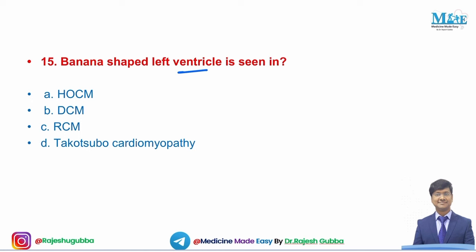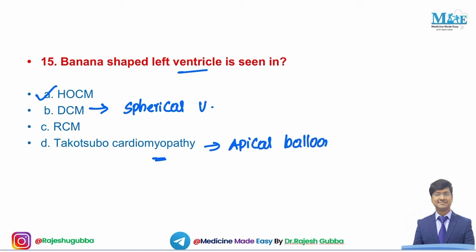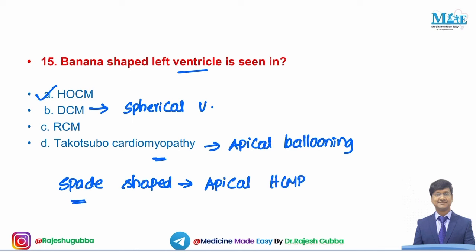Next question: banana-shaped left ventricle is seen in which condition? In HOCM, you have a banana-shaped left ventricle. In dilated cardiomyopathy, the ventricle is spherical. In Takotsubo cardiomyopathy, there is apical ballooning. In apical hypertrophic cardiomyopathy, you have a spade-shaped ventricle (ace of spades appearance). The answer is HOCM.